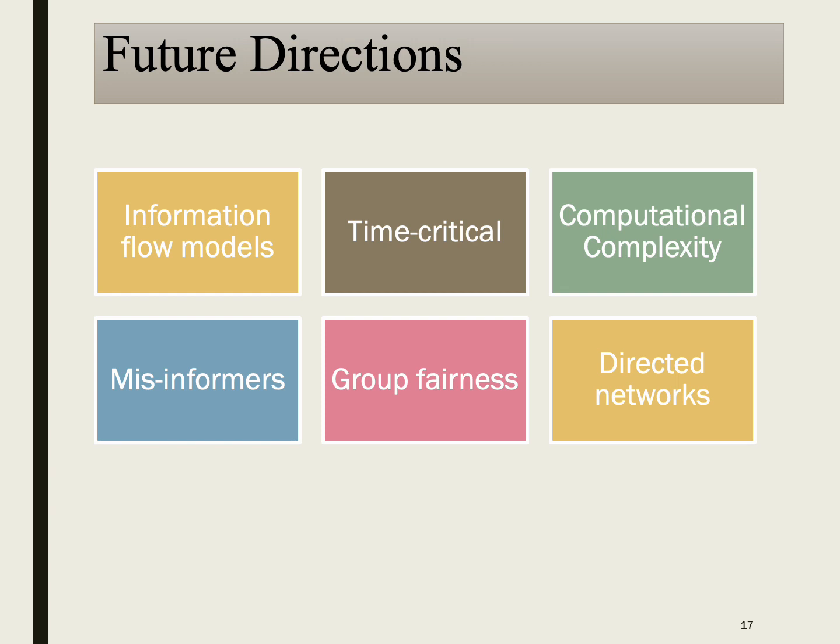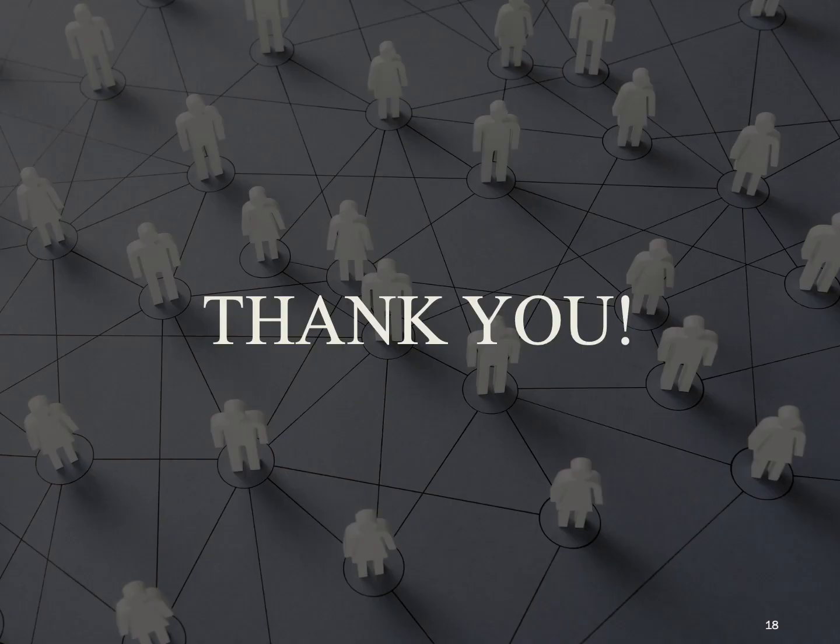We must acknowledge the limitations of our work. One limitation is that we did not consider that not all individuals may benefit from a specific piece of information. Additionally, we overlook the presence of misinformers. In future research, we can explore directed networks and alternative information flow models beyond the IC model. Conducting experiments on larger networks would enhance practical usability, and an interesting avenue would be to extend our problem to address group fairness and explore scenarios where the timing of information reception plays a crucial role.